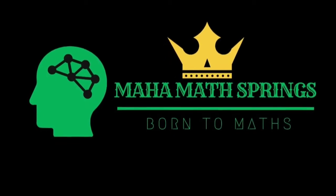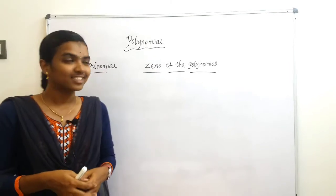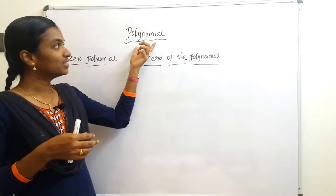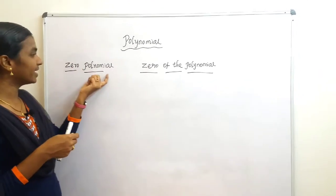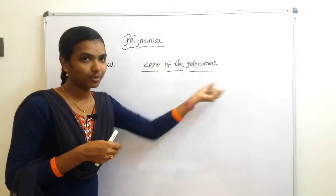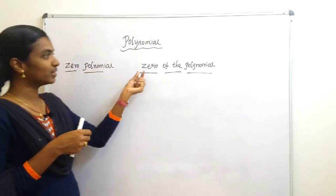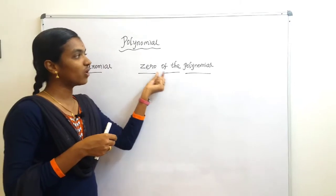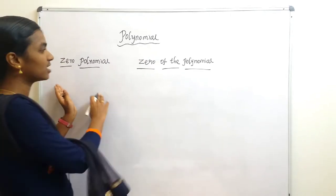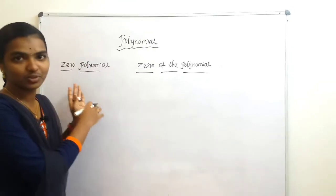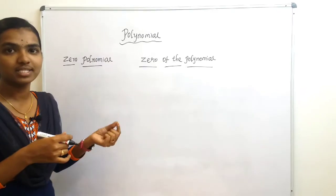Hello friends, welcome back to our channel. Today we are going to discuss the difference between zero polynomial and zero of the polynomial. Most students will be confused because both involve zero, but the difference is very important. Some students apply one concept in place of the other, which leads to completely wrong answers.